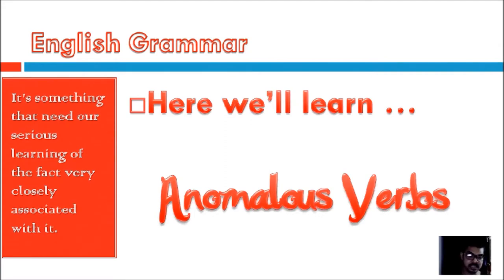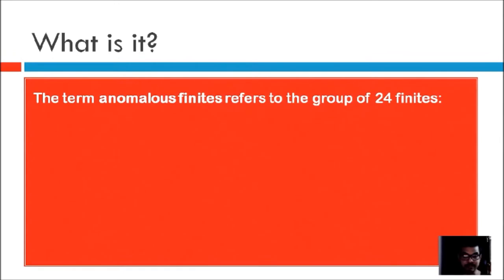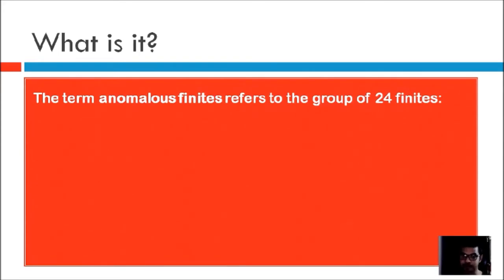Anomalous verbs are really some very important verbs to learn and we must consider these verbs well. The term anomalous finites — that's how it has been described in different grammar books, and sometimes it's also termed as anomalous verbs. We must remember that these are finites and they are 24 in number — a group of 24 finite verbs which we term as anomalous verbs.